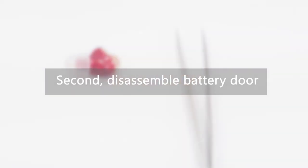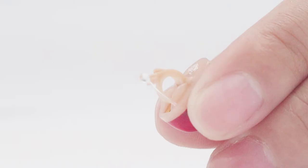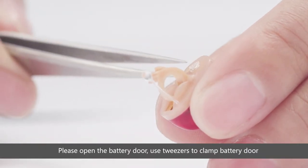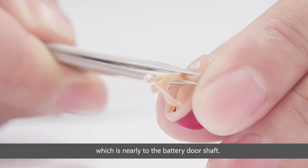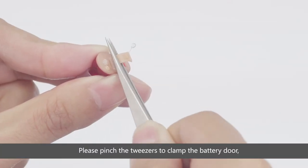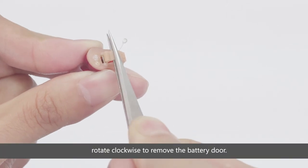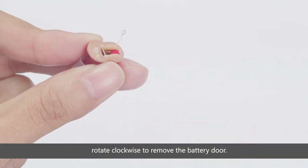Second, disassemble the battery door. Please open the battery door. Use tweezers to clamp the battery door near the battery door shaft. Pinch the tweezers to clamp the battery door, then rotate clockwise to remove it.